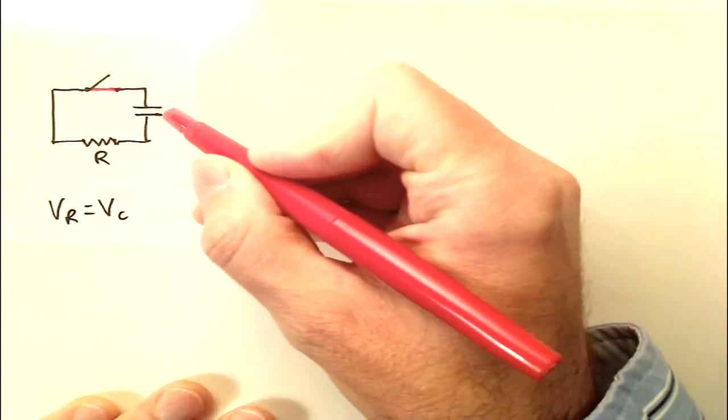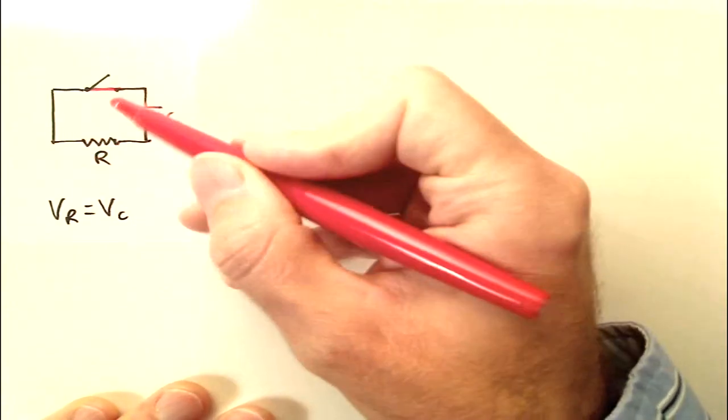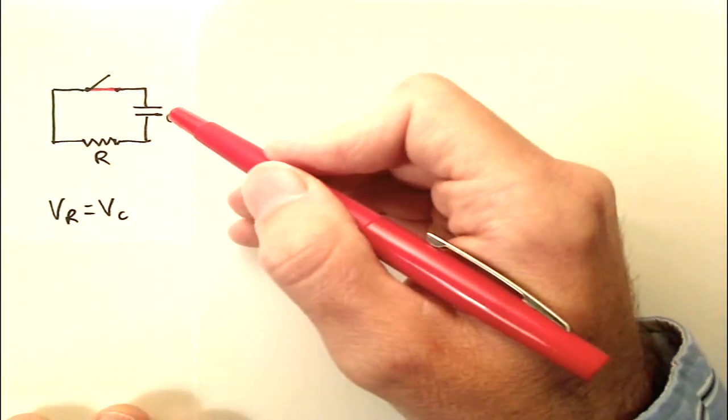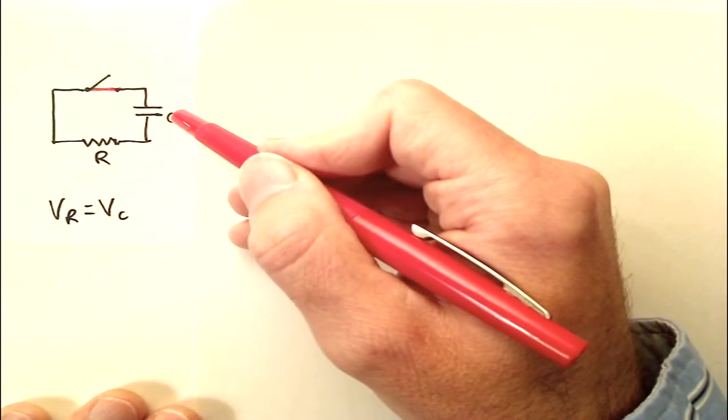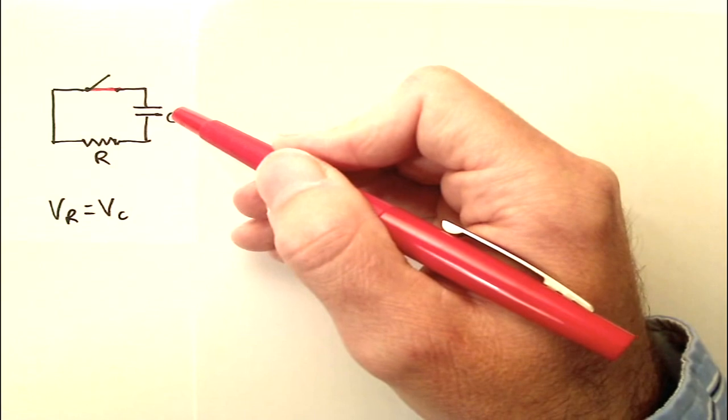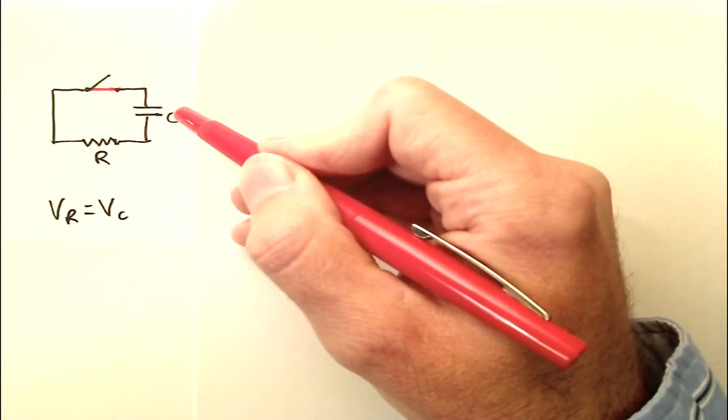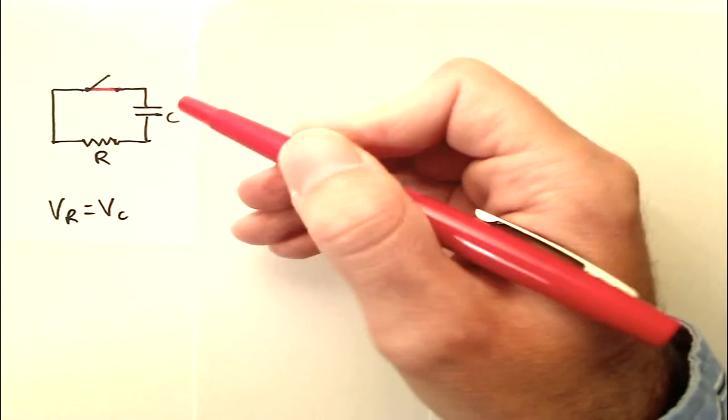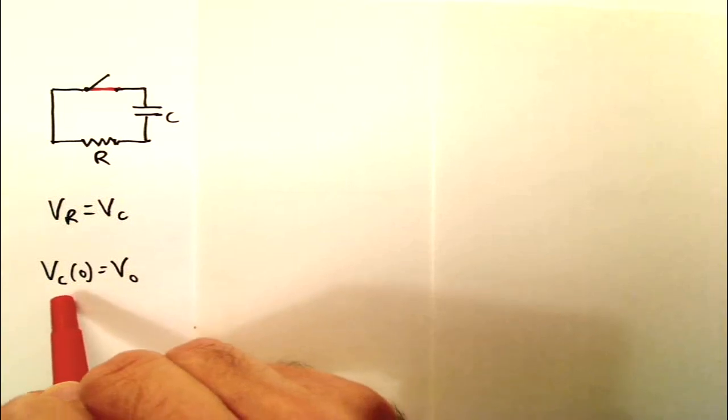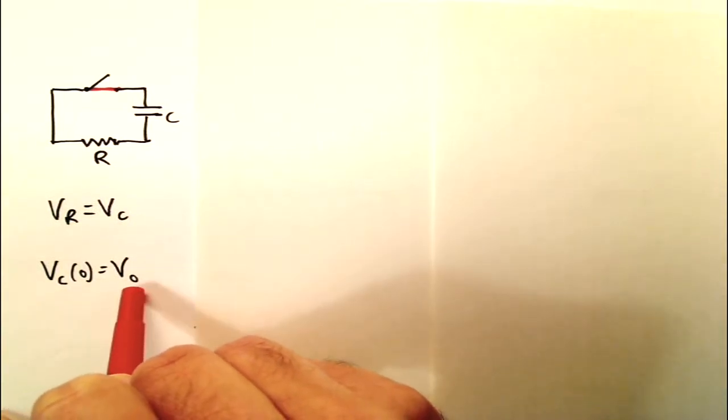The capacitor is actually going to function sort of like an EMF. It's going to provide the energy which allows current to flow through the loop and through the resistor. What's the initial value for the voltage going to be in the capacitor? If we had allowed the other circuit to sit there long enough, this would have been E. If we had disconnected that circuit sooner, this would have been less than E. Really, this could be anything. I'm just going to call it V0. So the voltage on the capacitor, when time t is equal to zero, is V0.